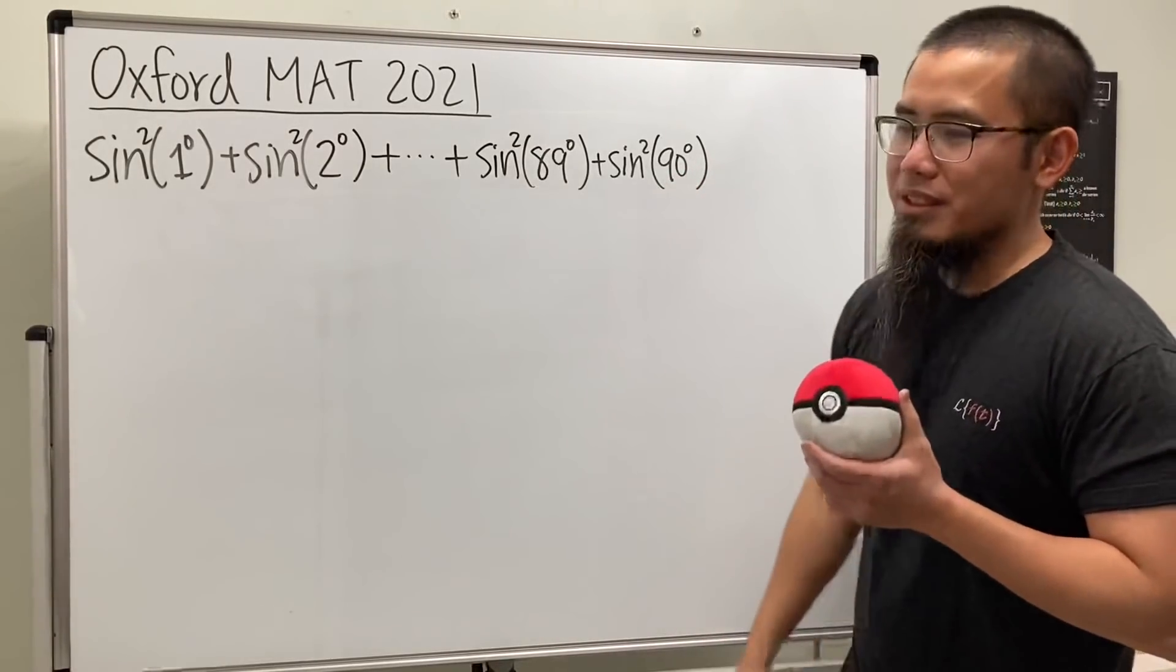This is from the Oxford MAT test in 2021, so if you want to get into Oxford this is one of the questions you will have to know how to solve. We are going to add sine squared of 1 degree plus sine squared of 2 degrees and so on up to sine squared of 90 degrees.